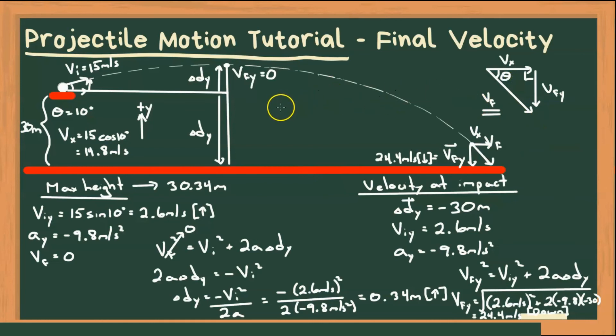so let's first solve for the hypotenuse. Let's go over here. So Vf, using Pythagorean theorem, is the square root of our x component. So 14.8 squared plus 24.4 squared, which gives us a final velocity or velocity at impact of 28.5 meters per second.